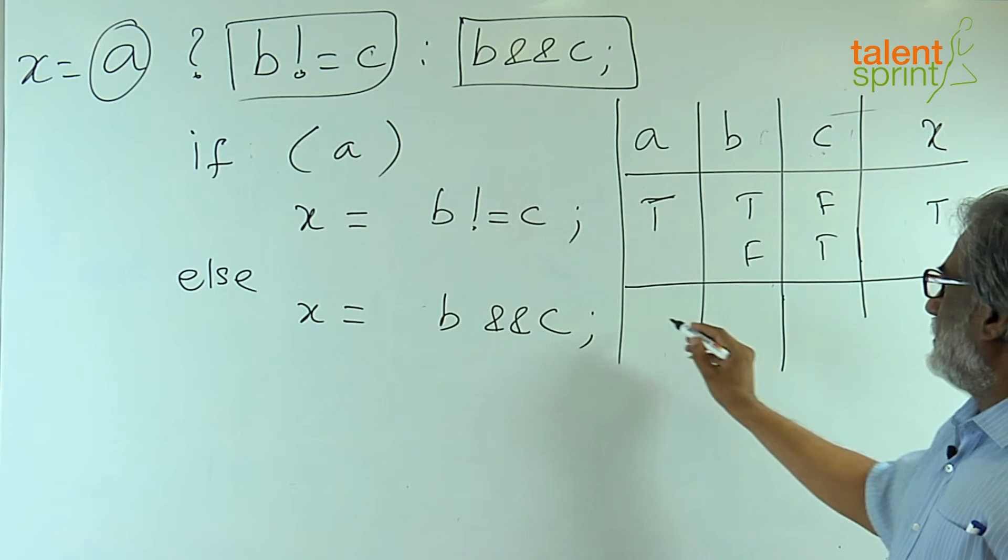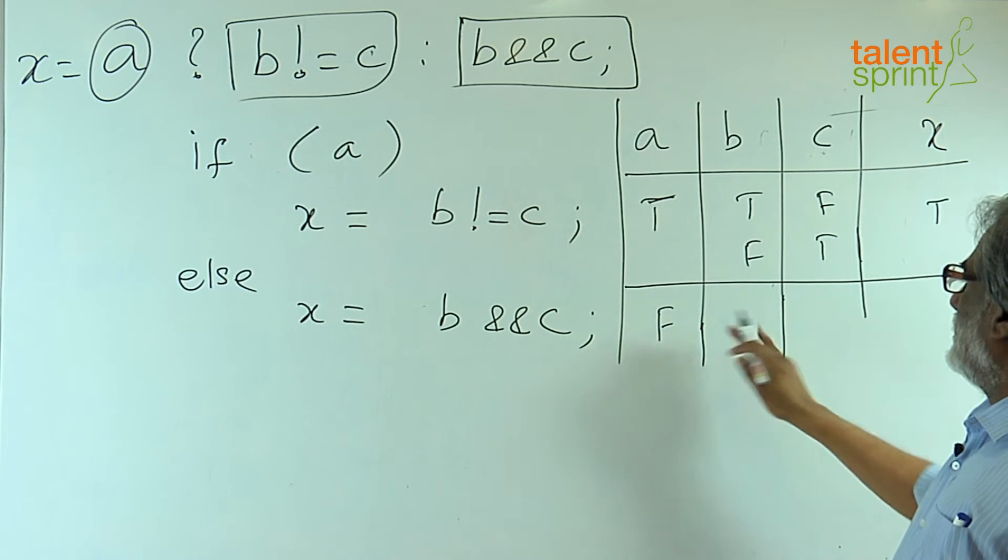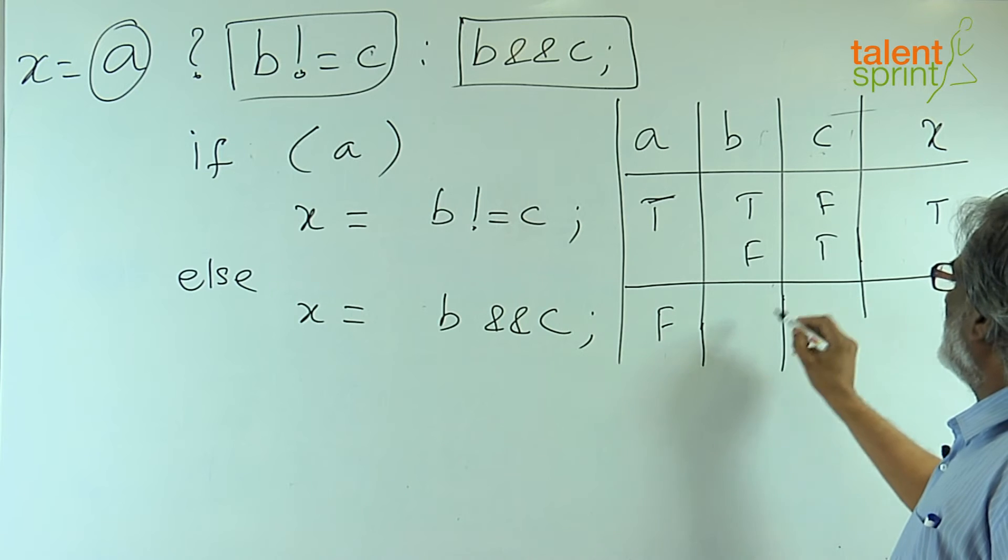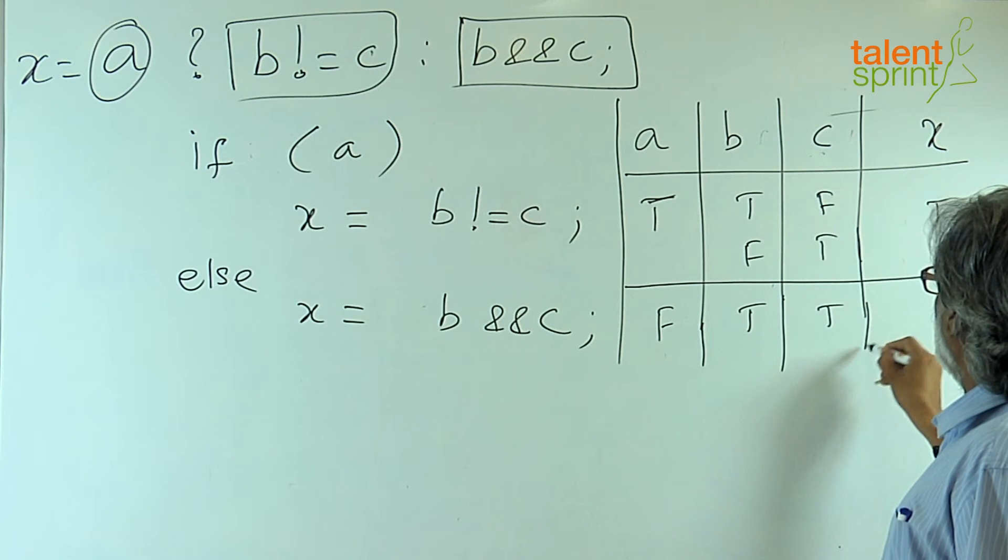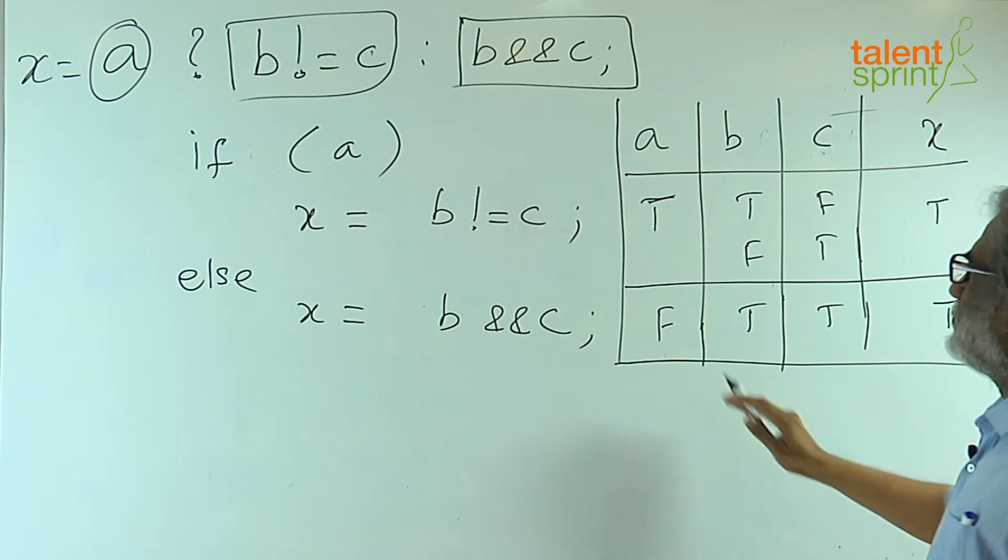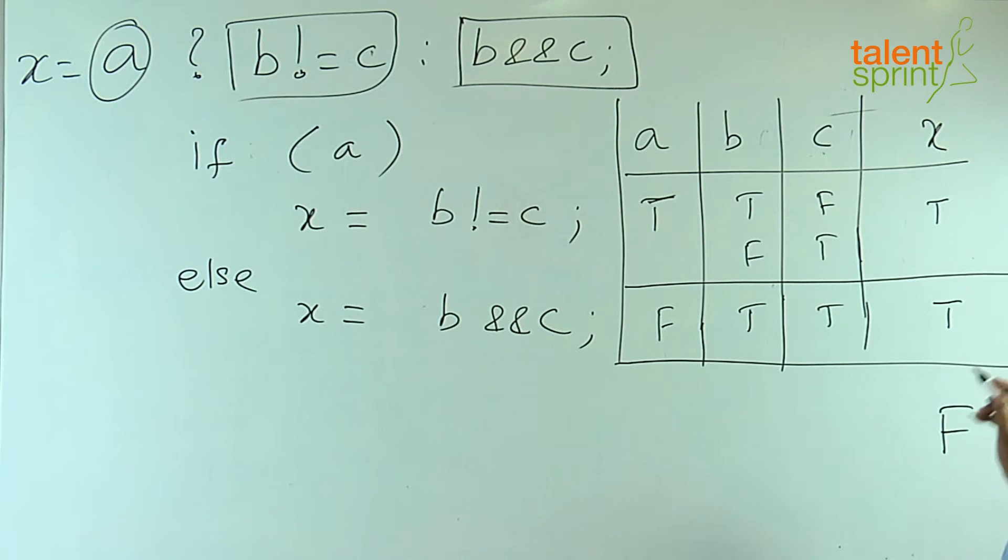Now, what happens if A is false, then both have to be true for this to be true. For all other values of A, B, C, x is false. It does not matter what is A's value, what is B's value.